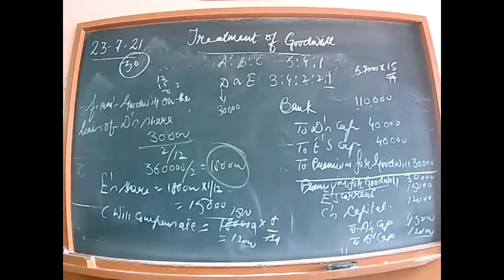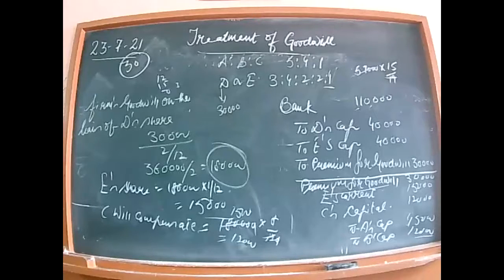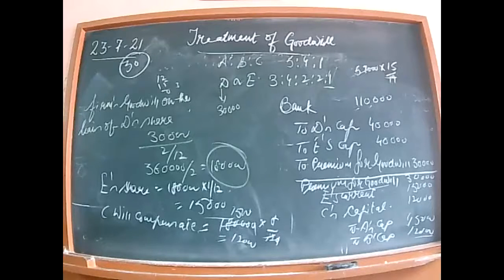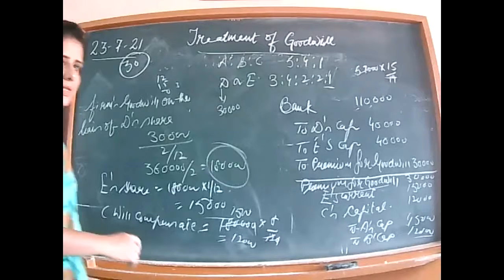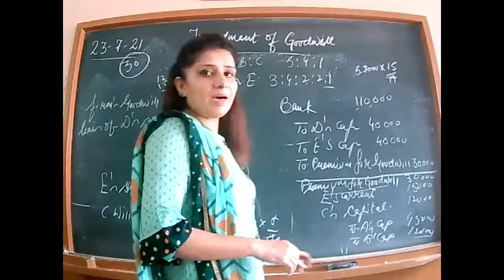This was illustration 30, which also involved hidden goodwill — a concept covered earlier. Now moving to back exercise questions. Question 20: Vimal and Nirmal.